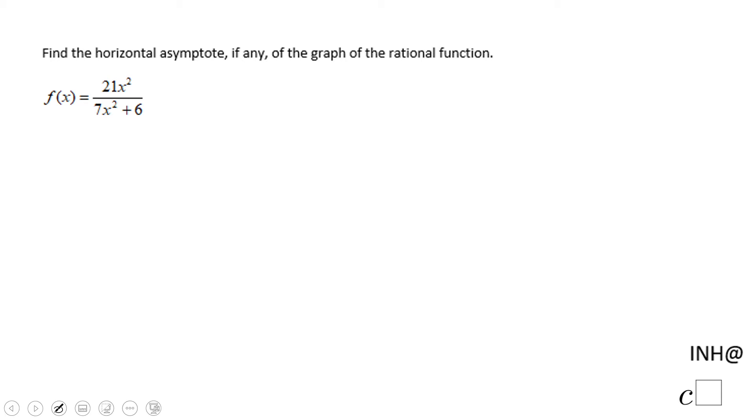Welcome or welcome back at I need help at C squared. In this example, we have a rational function and we're looking for the horizontal asymptote, if any.